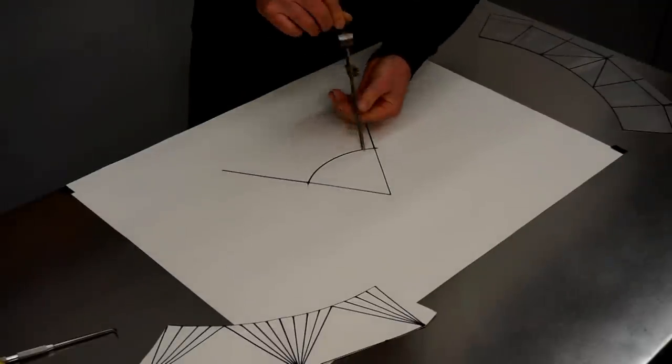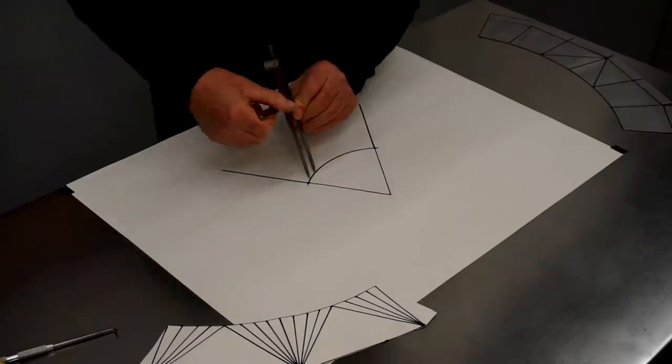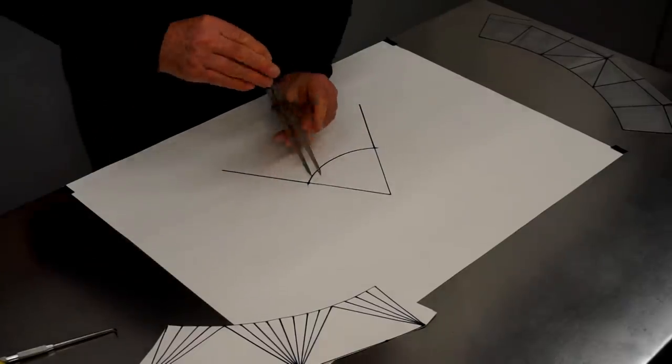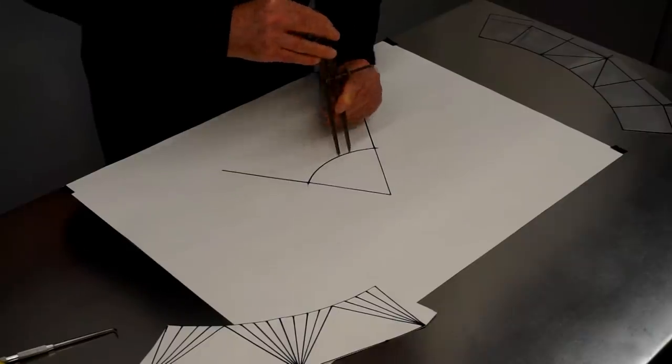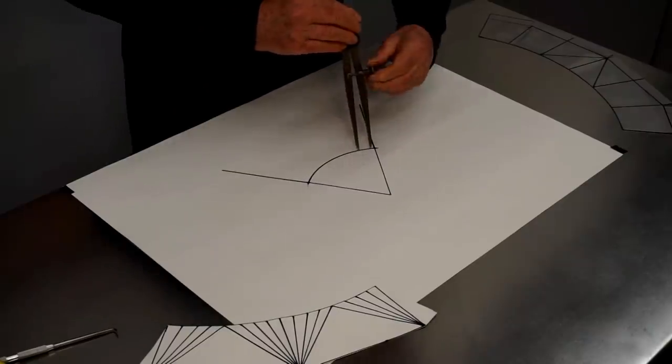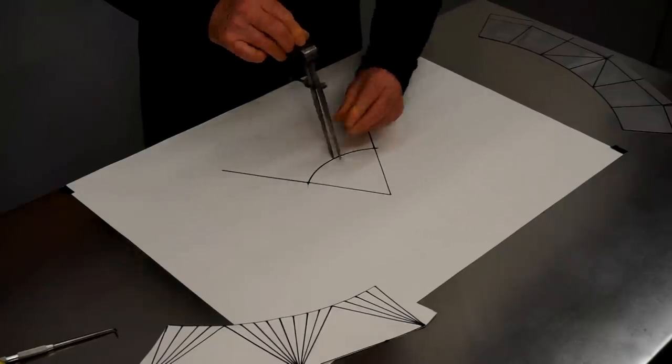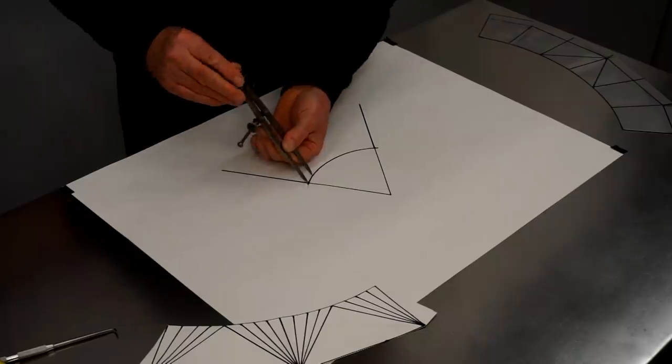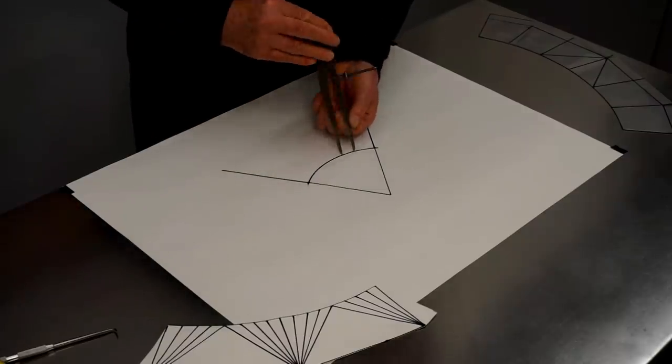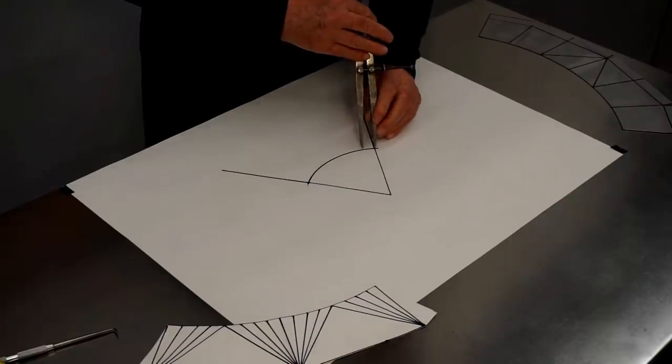And then using dividers, I'm going to divide this into eight equal segments. So let's take a stab at this. That's a little bit too big. I'll close it down a little bit and try it again. I need to go just a little bit larger. Just about there. Okay, we got it. Eight equal divisions.